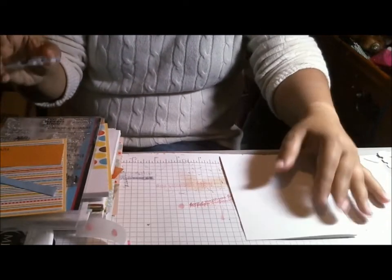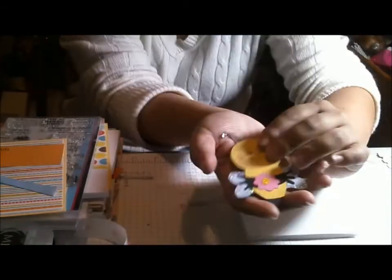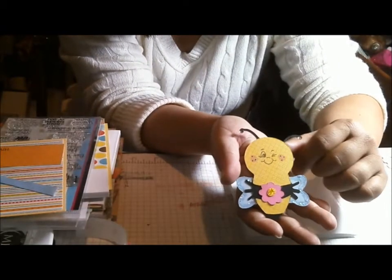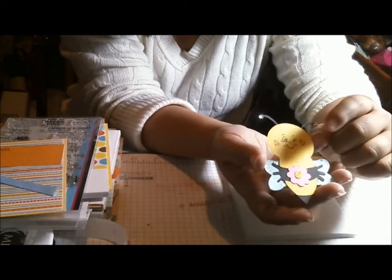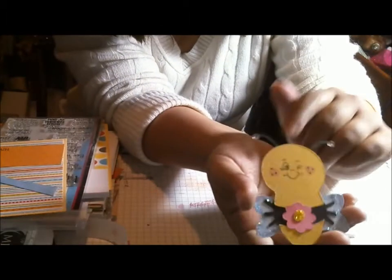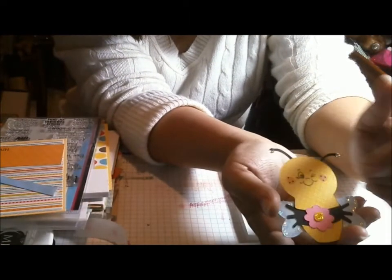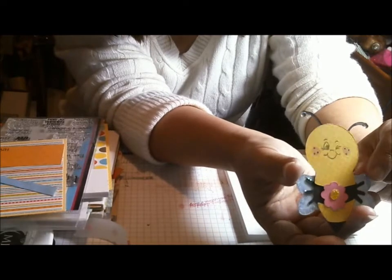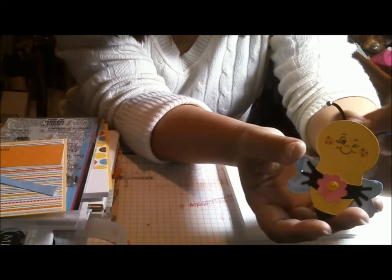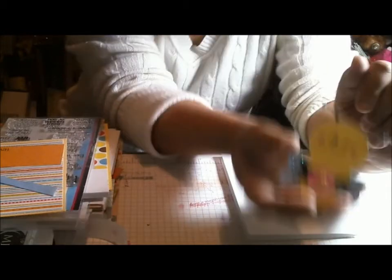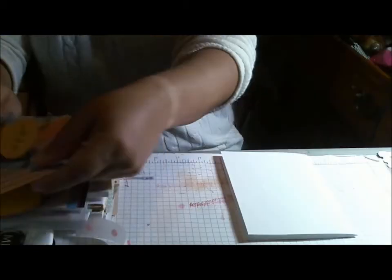I'm going to be using this cut from Paisley which is cut at three and a half inches and I stamped it with the Peachy Keen face and then embellished with some Stickles. I think he came out very cute.